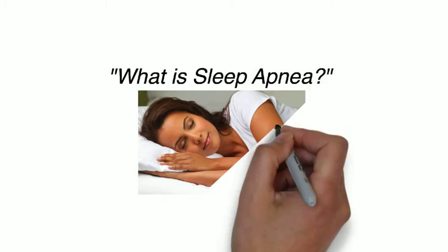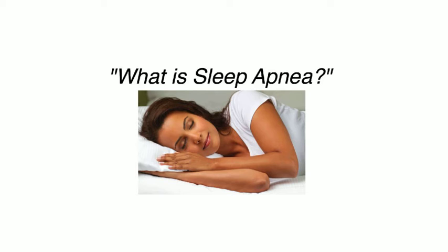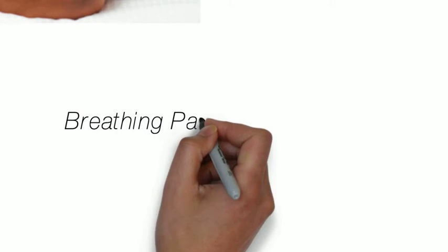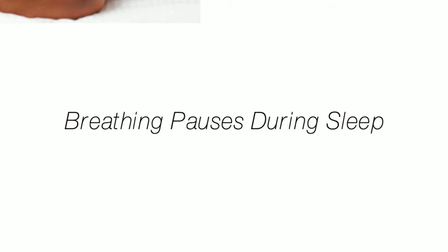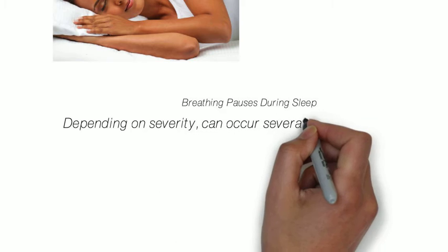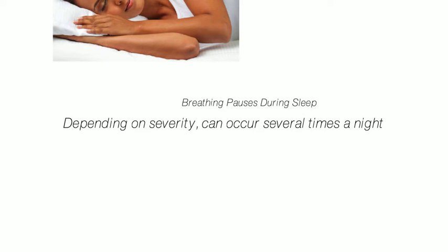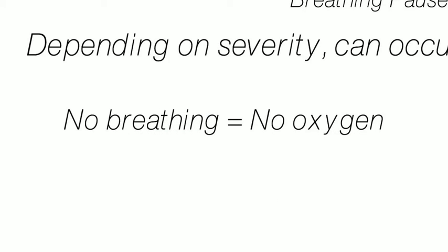Today we're going to answer the question: what is sleep apnea? We're going to do it as basic as possible. Sleep apnea is when a person's regular breathing is interrupted during sleep. Untreated sleep apnea episodes can take place anywhere from a few to up to several hundred times during the night or even the day. A pause in breathing long enough can cause less than enough oxygen to reach the body and the brain.